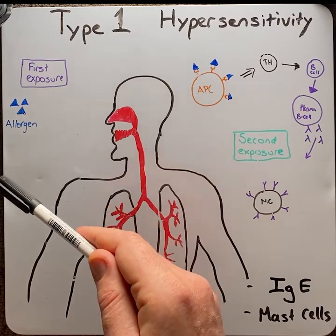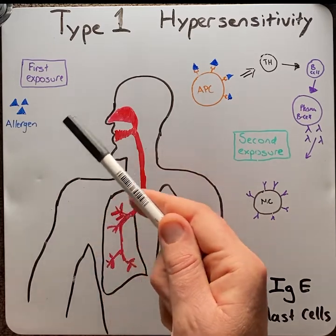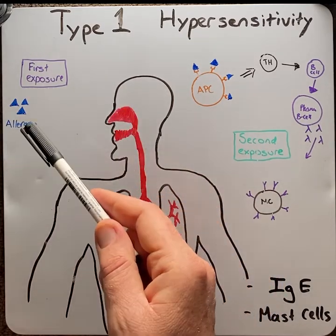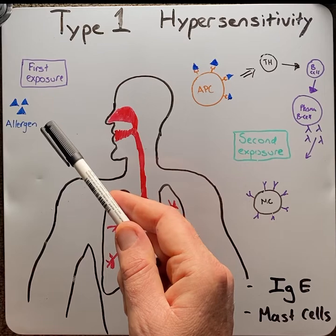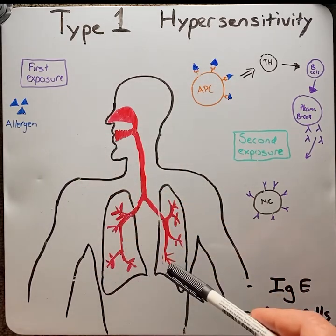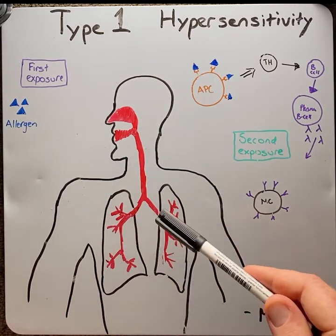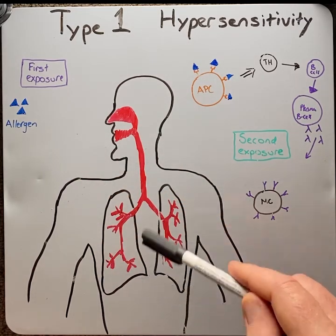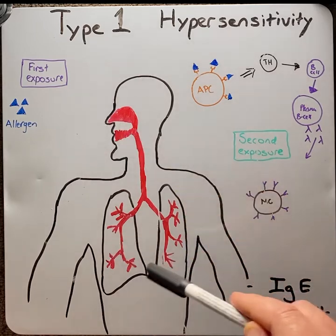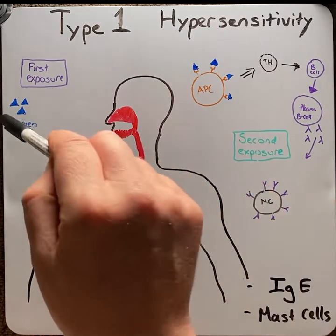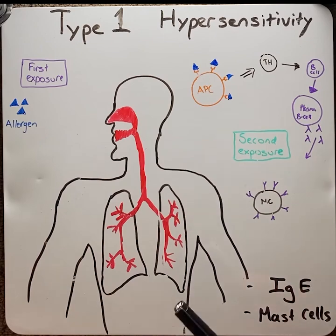examples could be medicines like penicillin, foods like nuts, chemicals, or pollen. Throughout different parts of the body — such as the gastrointestinal tract, the airway, or skin — IgE antibodies will be produced against that allergen.